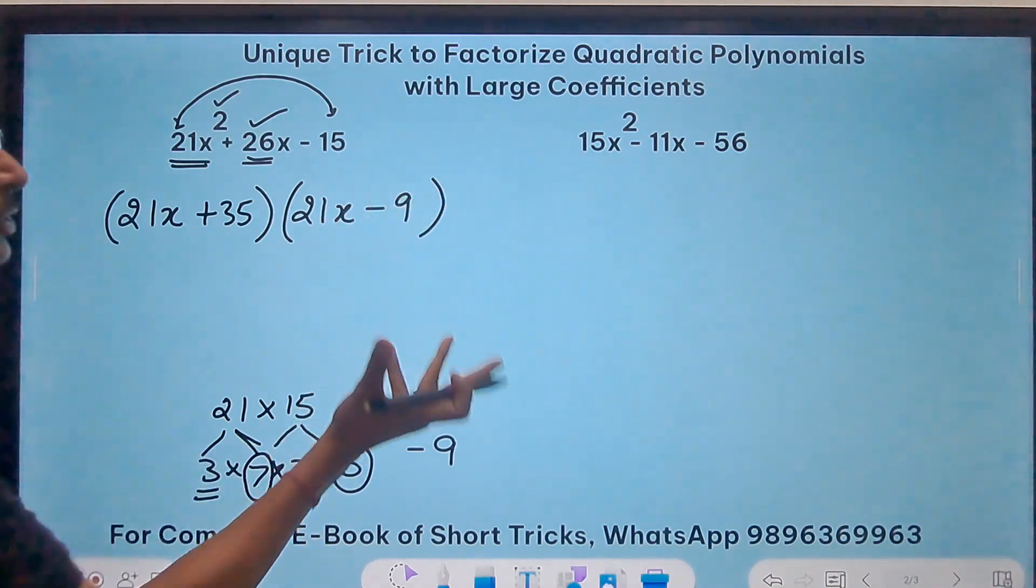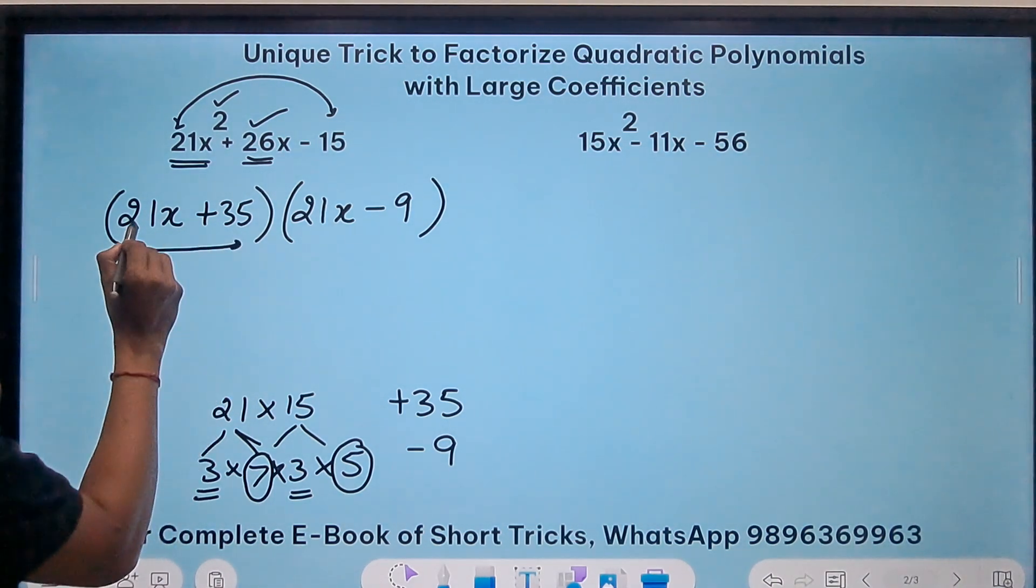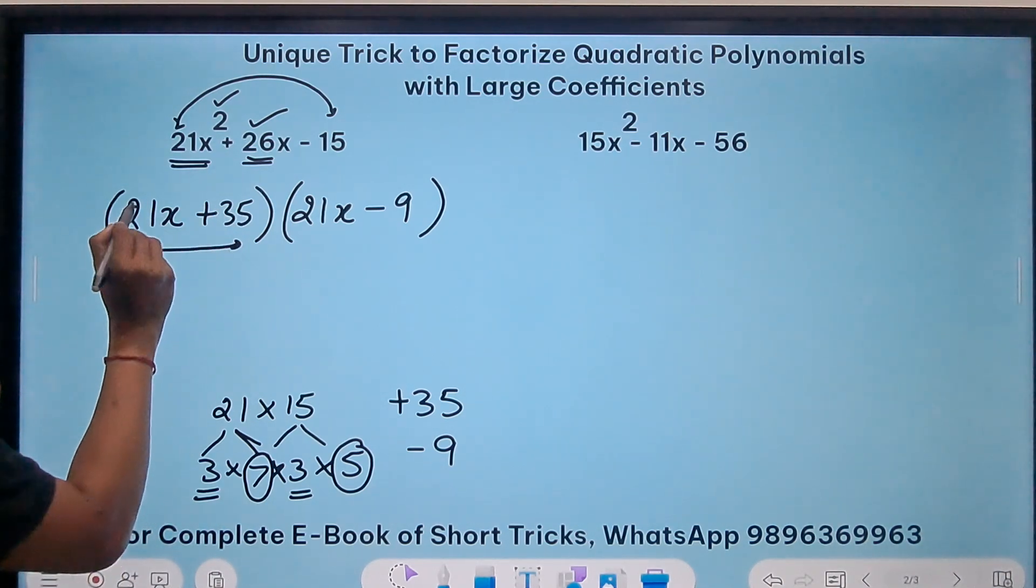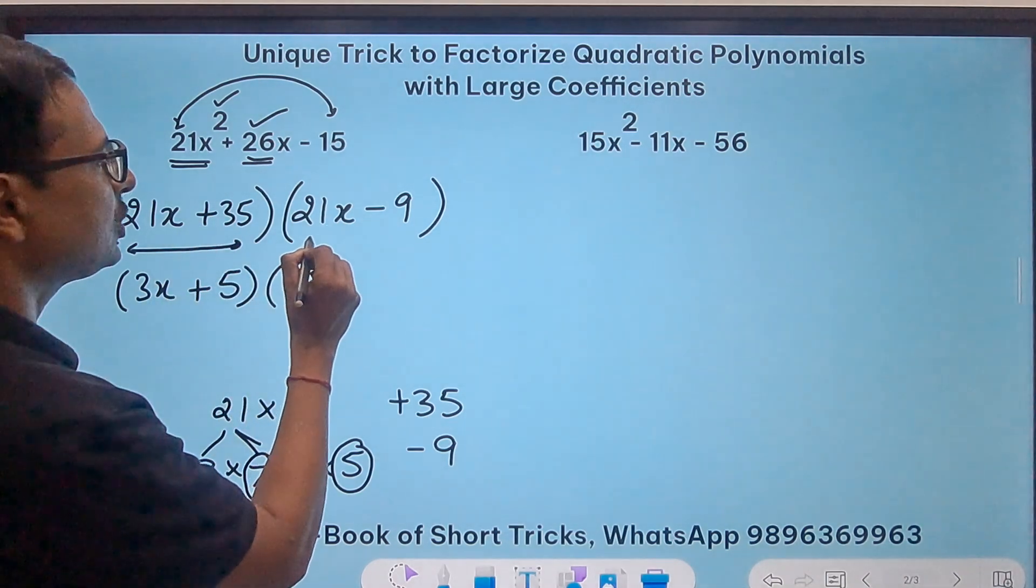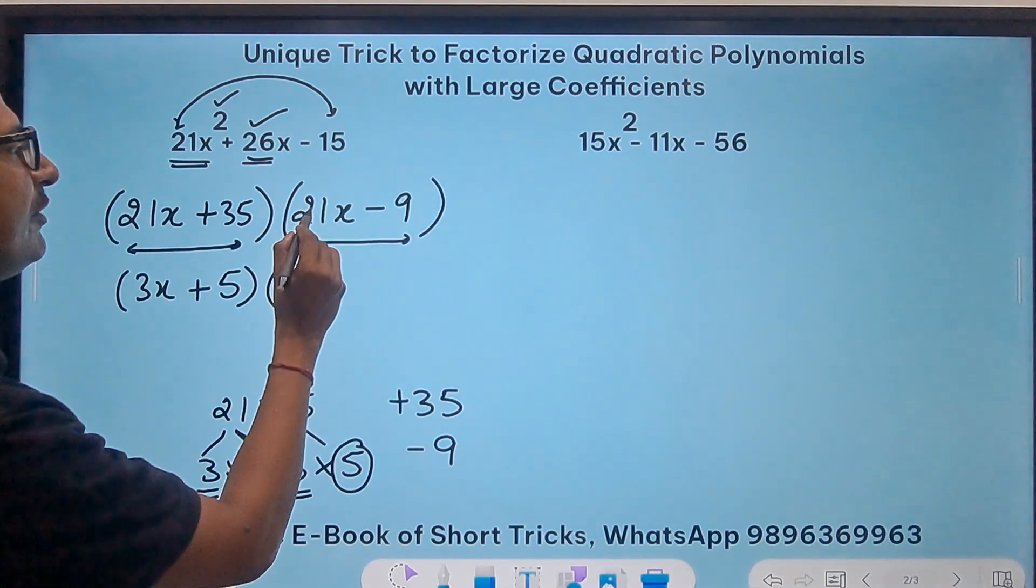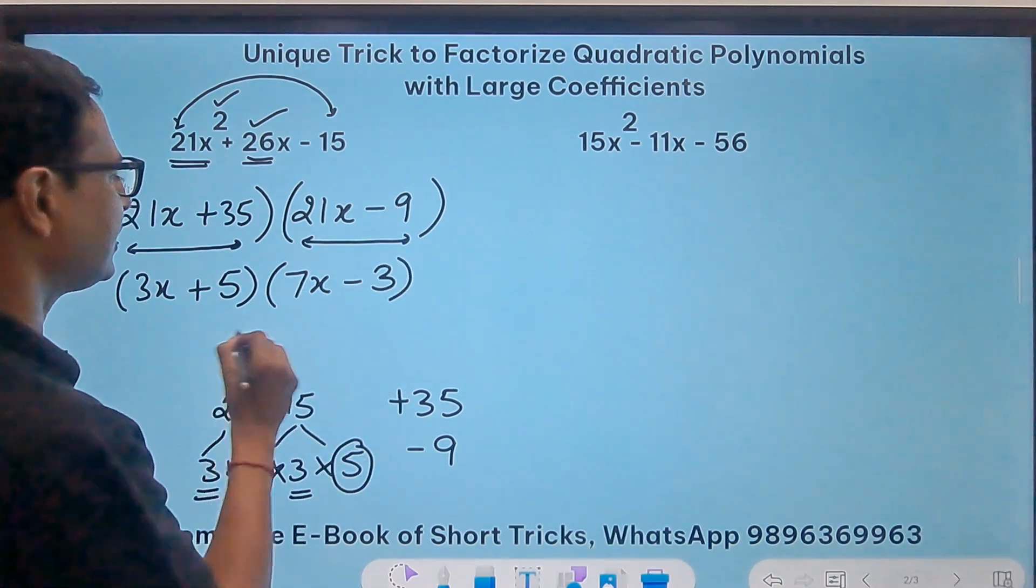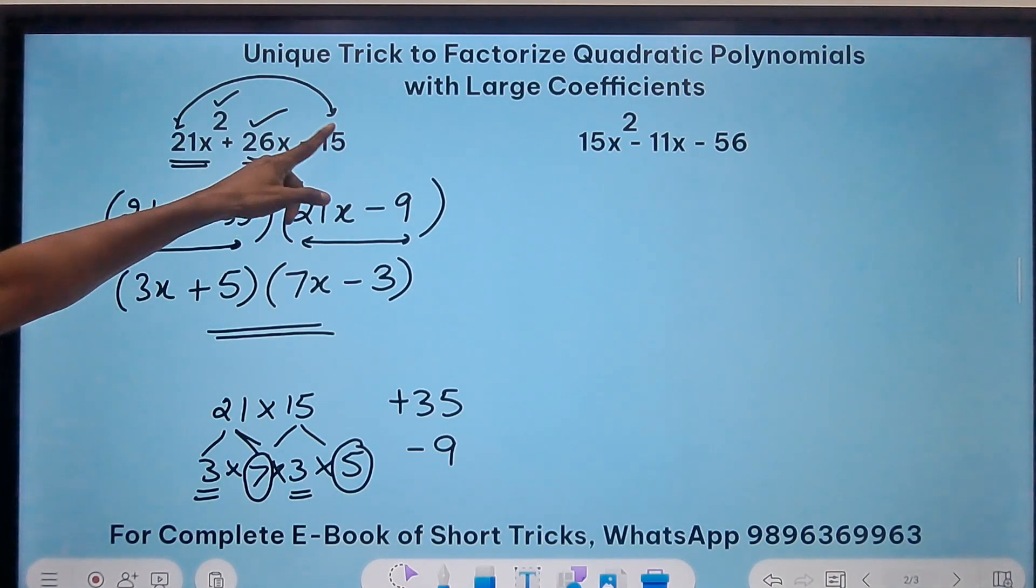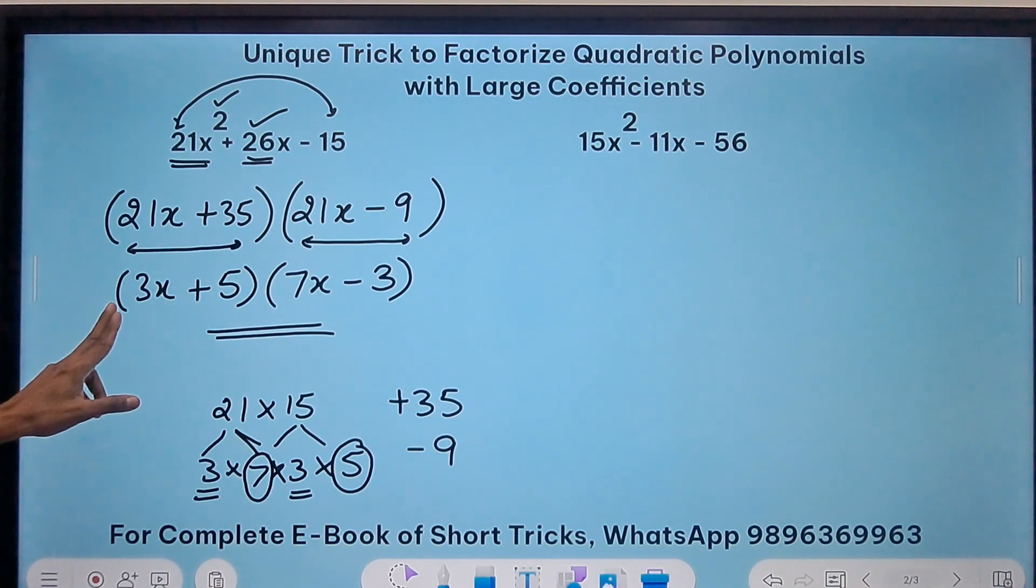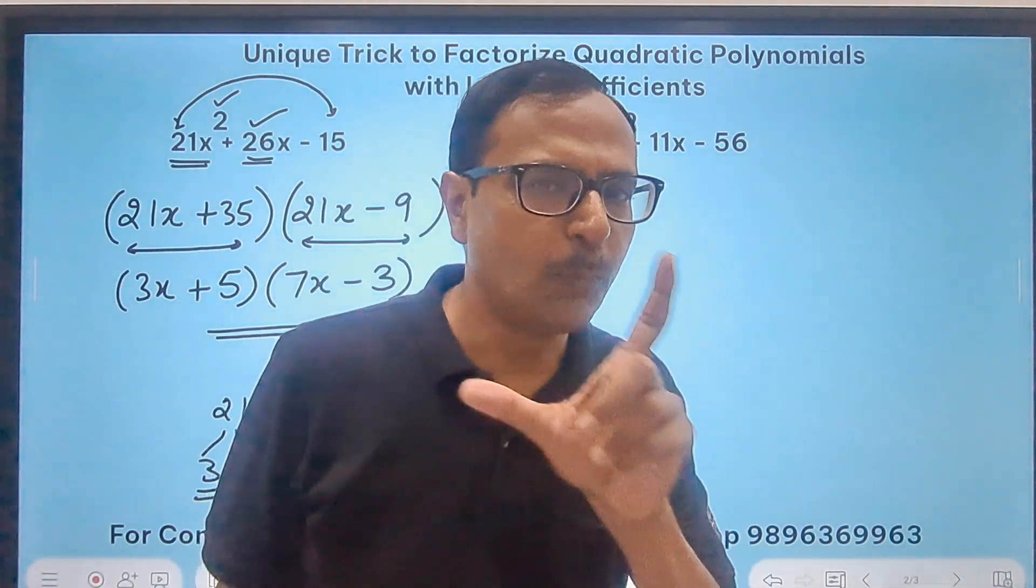And now remove the highest common factor from each bracket. If you check here, 21 and 35, the highest common factor is 7. So if I divide this by 7 I get 3x. Divide this by 7 I get 5. In the second bracket 21 and 9 are divisible by 3. So if I divide this by 3 I get 7x, and if I divide this by 3 I get 3. And so the factorization of 21x square plus 26x minus 15 is 3x plus 5 and 7x minus 3. Now see the number of steps have reduced and I think you will be feeling more comfortable.